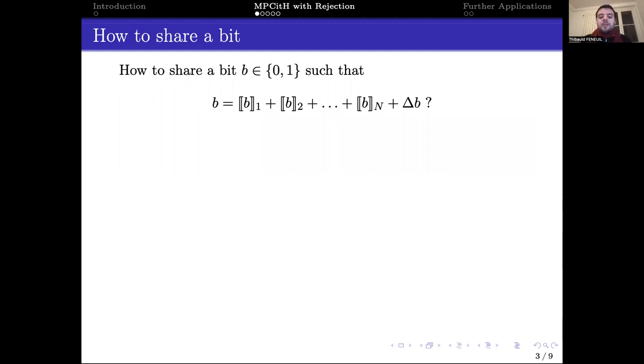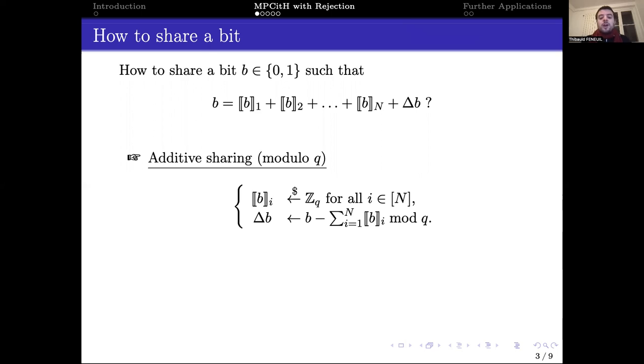When applying this paradigm, we need to share the secret information. In the case of the subset sum problem, the secret is a binary vector, so we must share bits. The standard way to share is to use additive sharing modulo q, implying that each share is uniformly sampled modulo q, and that the sharing offset is deduced to have the wanted equality. However, since the sharing offset is included in the proof transcript, when using this sharing, the communication cost would be already more than 128 kilobytes for the sole sharing of the secret when using standard values.